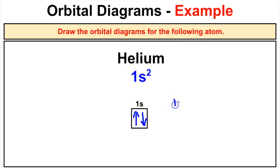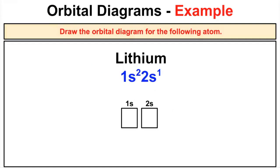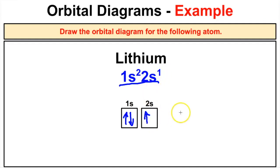For helium, both orientations of the electron pair are acceptable. Moving on to lithium: the electron configuration has two electrons in the 1s orbital spinning in opposite directions, and then one electron in the 2s orbital. That 2s electron can be drawn as either an up arrow or a down arrow — both are acceptable. There is the orbital diagram for lithium.